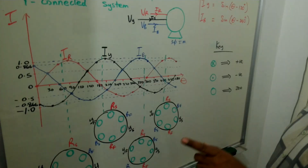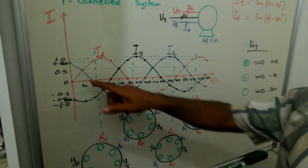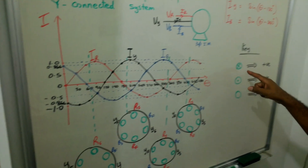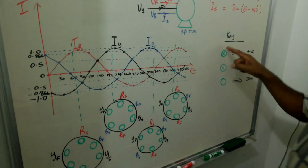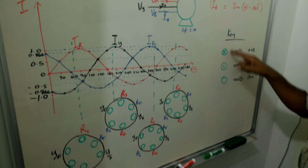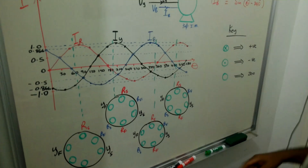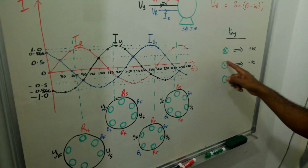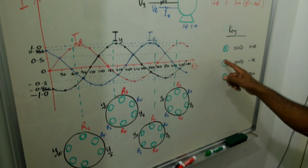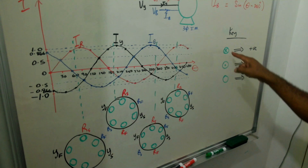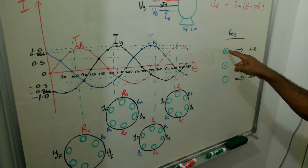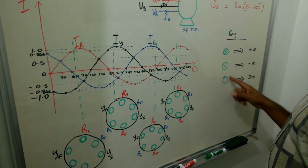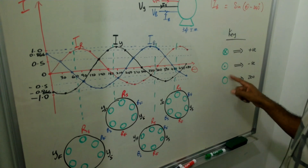We're going to use as our key that when the current waveforms are positive, we'll represent what's happening in this diagram by a cross. When the waveform reaches a negative value, it's going to be represented by a dot. When the waveform is at zero, it's represented by a circle.